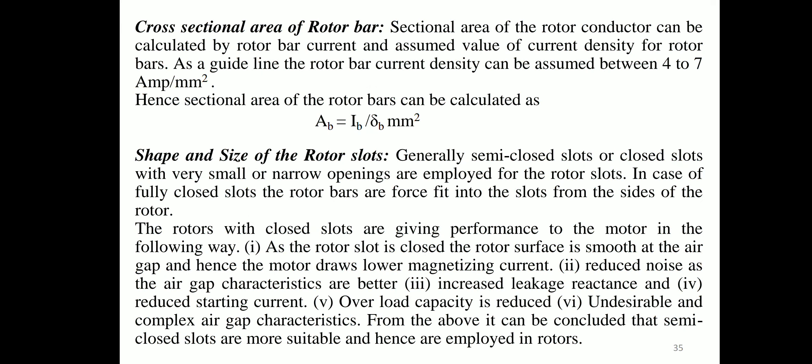The cross-sectional area of rotor conductors is calculated from rotor bar current and assumed current density. The rotor bar current density can be assumed between 4 to 7 A/mm². Hence sectional area of rotor bars: Ab = Ib / δb mm².